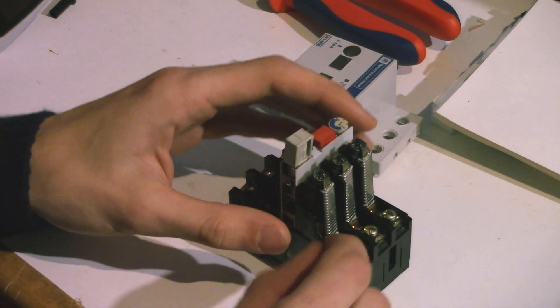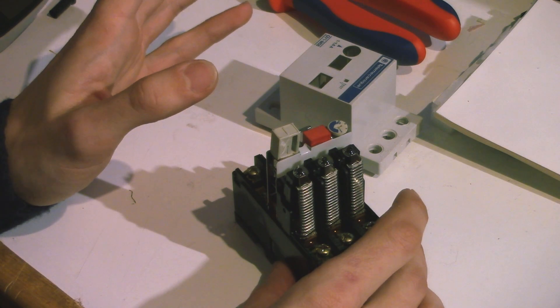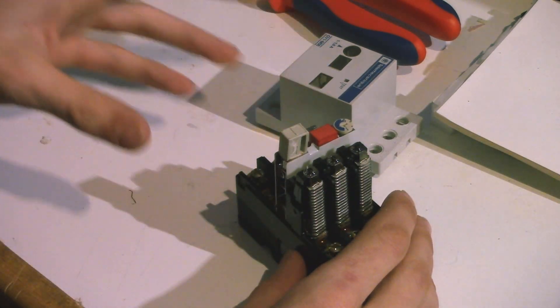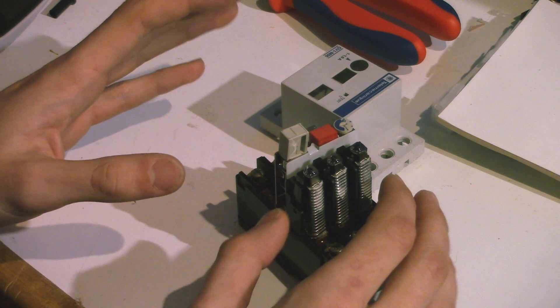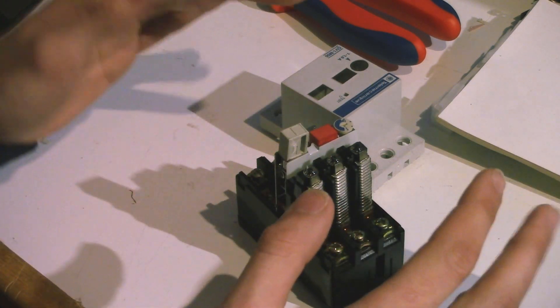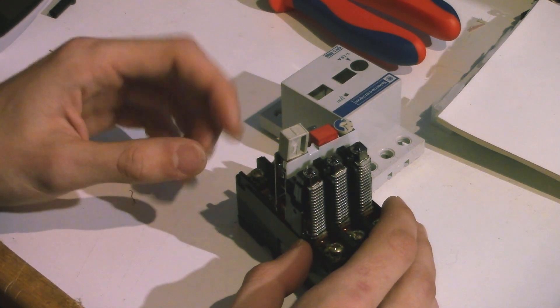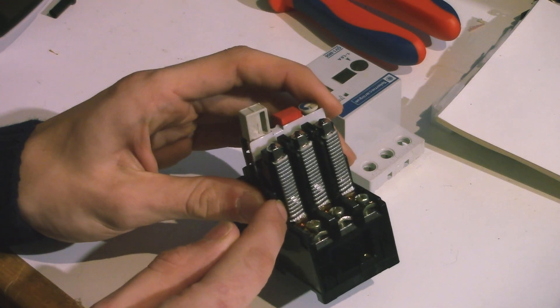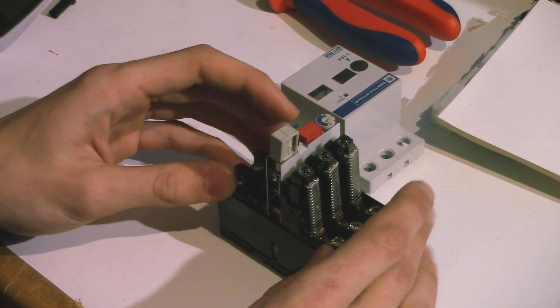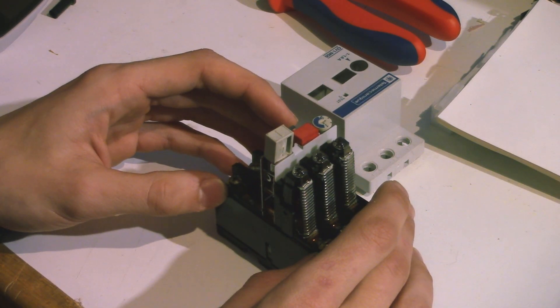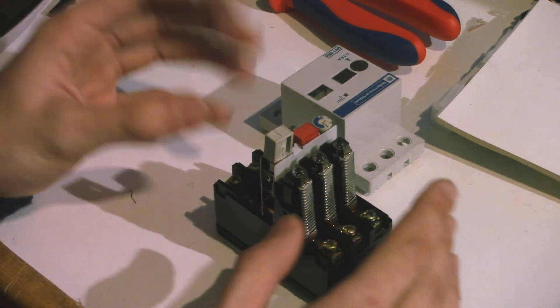And so what we have, the combined protection mechanism, is we have these bimetallic strips, the thermal protection, preventing small overcurrents, just too much current being drawn by the motor or by some appliances, slightly over the threshold. It takes slightly longer to activate, but it's probably fine because the system will handle a slight overcurrent for a small amount of time. And then for short circuits, we have an extremely fast protection mechanism, which is the magnetic protection. And so those two mechanisms are combined in a breaker switch to make sure that your house does not catch fire when there is a short circuit or when you're drawing too much current using your devices and appliances.